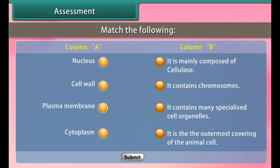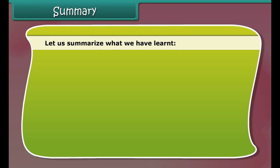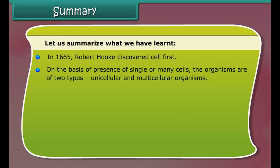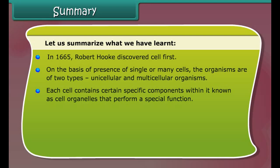Plastids are present only in plant cells, not in animal cells. Plastids are similar to mitochondria in external structure. There are two types of plastids: chromoplasts (colored plastids) and leucoplasts (white or colorless plastids). Chromoplasts provide different colors to flowers and fruits. Leucoplasts are colorless plastids that store materials like starch, oils, and protein granules. Chlorophyll-containing plastids are known as chloroplasts, and these are important for photosynthesis in plants.